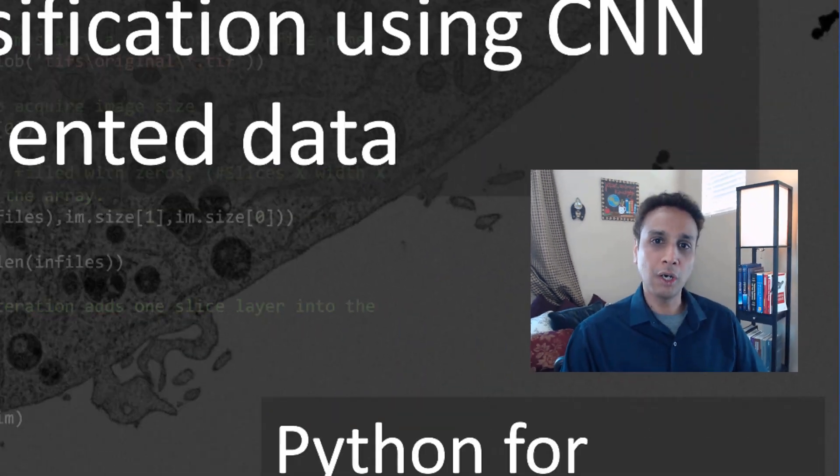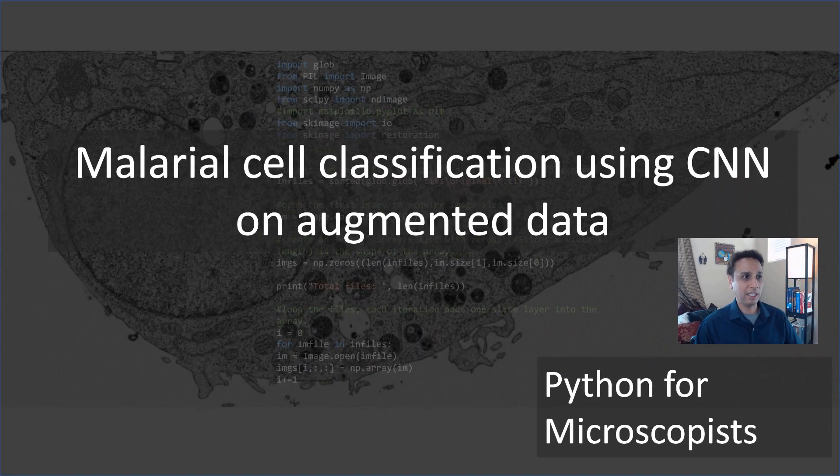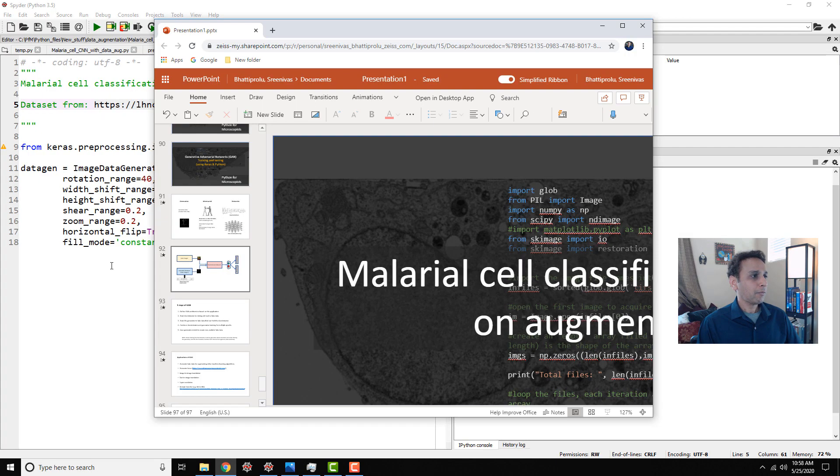We have quite a few images for parasitized and uninfected, but they're not enough to get a robust model trained. So let's actually augment that data and then use that as an input to our model.fit. Let's jump in.